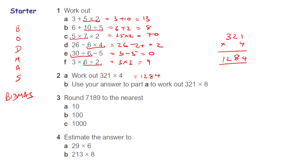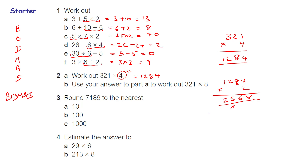Use your answer in part a to work out 321 times 8. If 321 times 4 is 1284, to get from 4 to 8 I just times by 2, so I double the answer. Four twos are eight, two eights are 16 — so six, carry the one. Two twos are four plus one is five, and two ones are two, giving 2568.